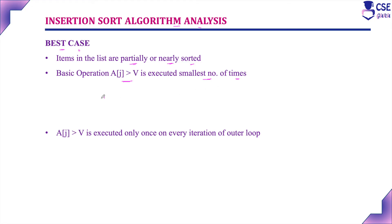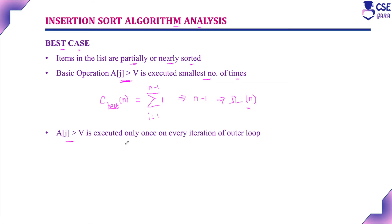So the best case efficiency: C_best(N) is equal to the summation from i equal to 1 to N minus 1, and this basic operation will execute only one time. So we will get the time efficiency N minus 1, which is approximately equal to the best case efficiency defined by omega, and the time complexity is N. Here, A[j] greater than B is executed only once on every iteration of the outer loop — when the outer loop condition is true, the inner loop executes only one time — giving the best case efficiency.